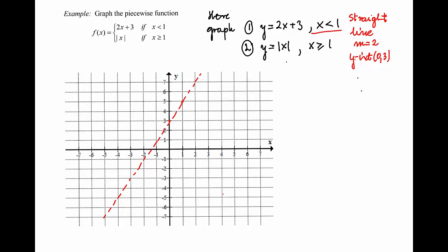We want this graph only for x less than 1, so we find the point on the graph that corresponds to x equal 1, which is the point (1, 5). This point is not on the graph of the function f(x) because the function does not use x equal 1 in the formula 2x plus 3. So we draw an open circle to indicate this point is not included, and we take every part of that line that corresponds to x less than 1, choosing the part to the left of the point (1, 5).